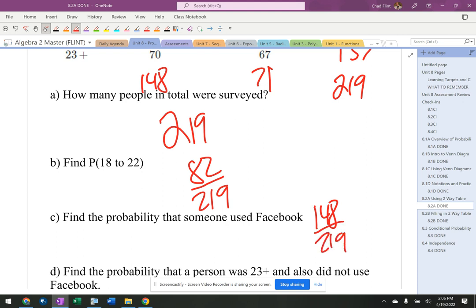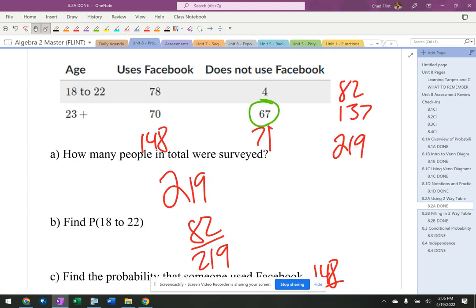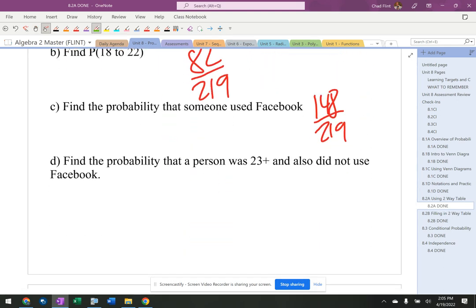All right, 23 plus and did not use Facebook. 23 plus and did not use Facebook are those 67 special people right there out of 219.